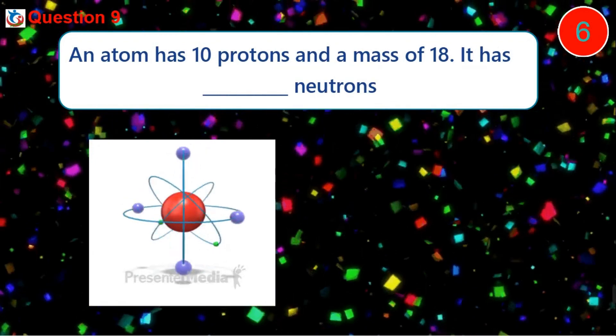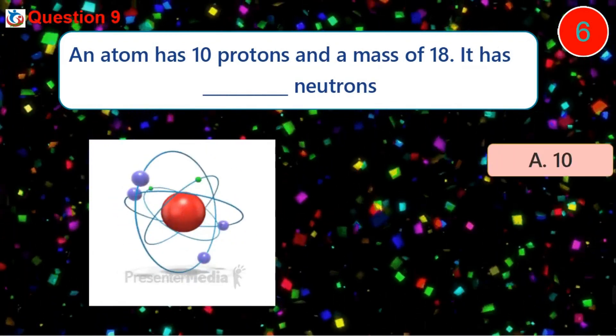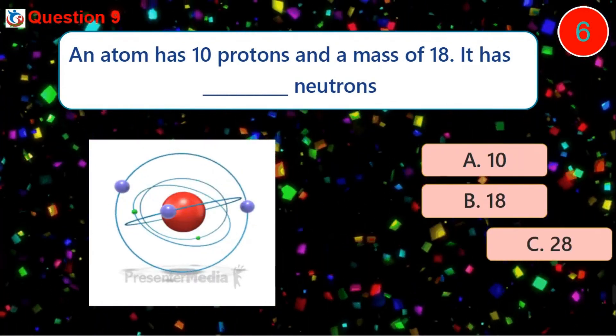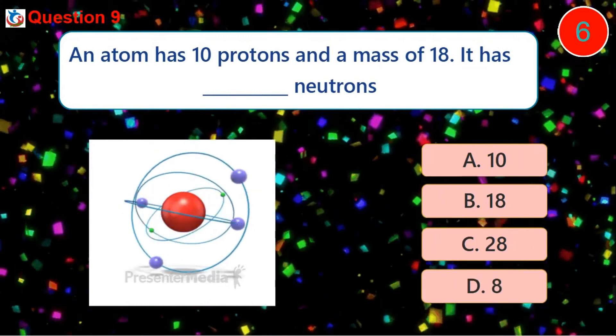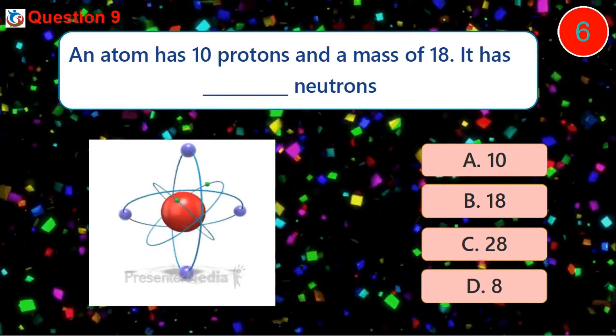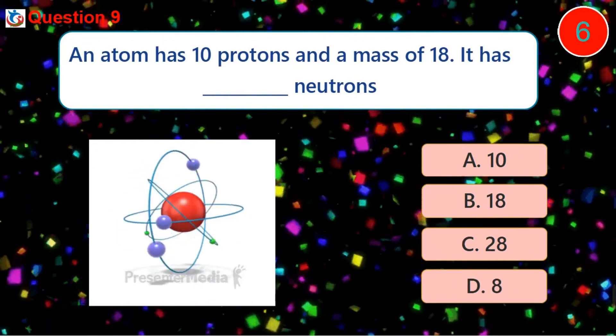Question 9. An atom has 10 protons and a mass of 18. It has dash neutrons. A. 10 B. 18 C. 28 D. 8.